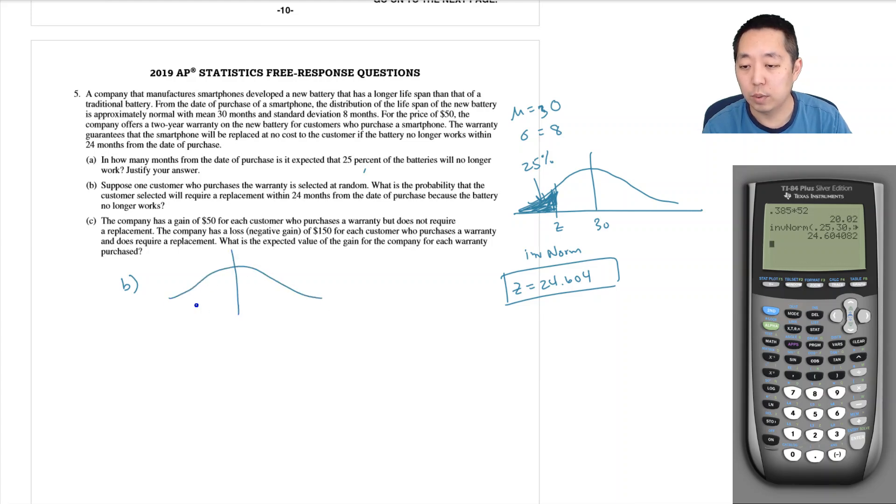So this is the same picture, but what's the probability that here I have 24, that they would have failed—that means that their unit failed in less than 24 months. To find this area, we use normal cdf.